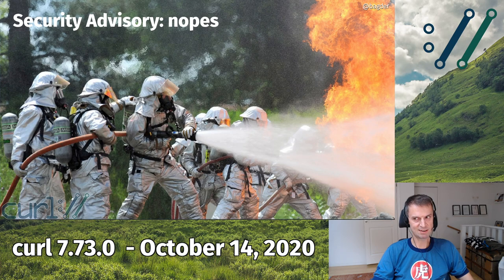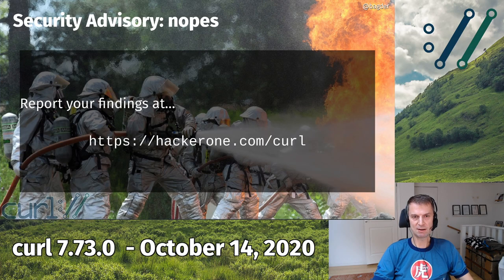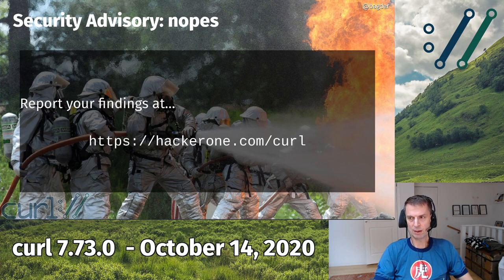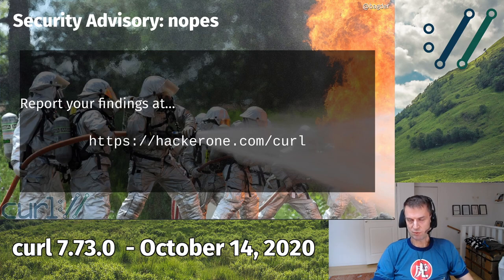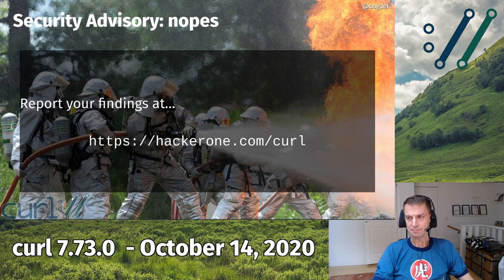There are no security advisories in this release, and I want to emphasize that because it's really awesome when we manage that. If you find or suspect anything security-related in curl, go to the HackerOne page and submit it there. If you're right and it is a security problem, we'll pay you a reward. You're likely to get upwards of around $1,000 — maybe a lot more if the problem is serious enough. It benefits all of us if you find problems and we pay you for them.